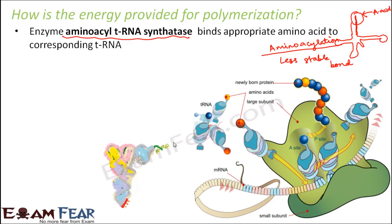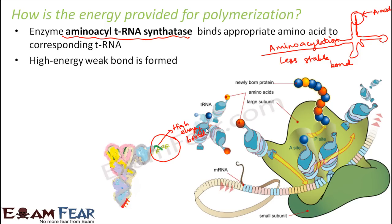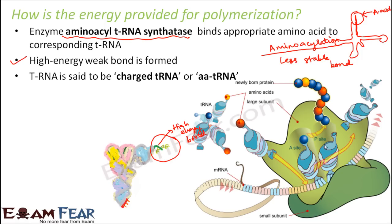The amino acid joins to the tRNA and this bond formed is a high energy bond with less stability — a high energy weak bond. The tRNA's purpose is to carry these amino acids near the mRNA. Each tRNA carries one amino acid. When the tRNA comes near the mRNA, it matches with the correct base sequence. Once aminoacylation is done, the tRNA is called an aminoacylated tRNA, or aatRNA, or charged tRNA — meaning the tRNA has an amino acid attached to it.